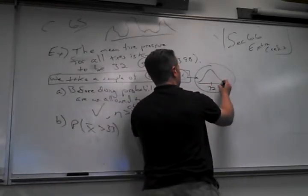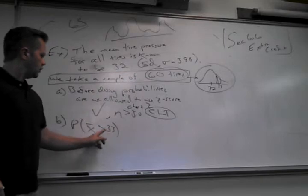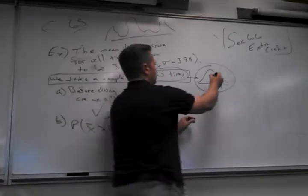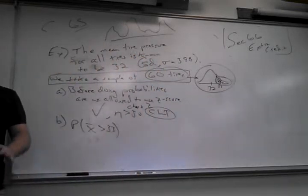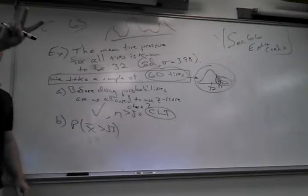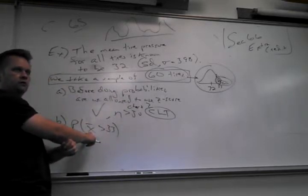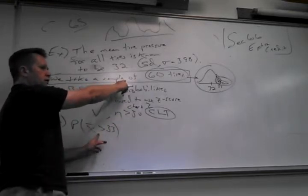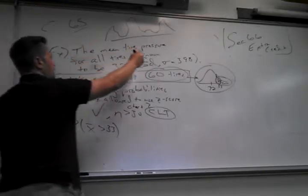The two triggers that tell me to change the standard deviation: we take a sample, and I ask about the sample mean. When those two things happen, I have to change the standard deviation. Why? Because the picture is now skinnier. The old sigma of 3.98 is good for individual tires — that's the section 6.3 stuff. I need to divide it by the square root of n.